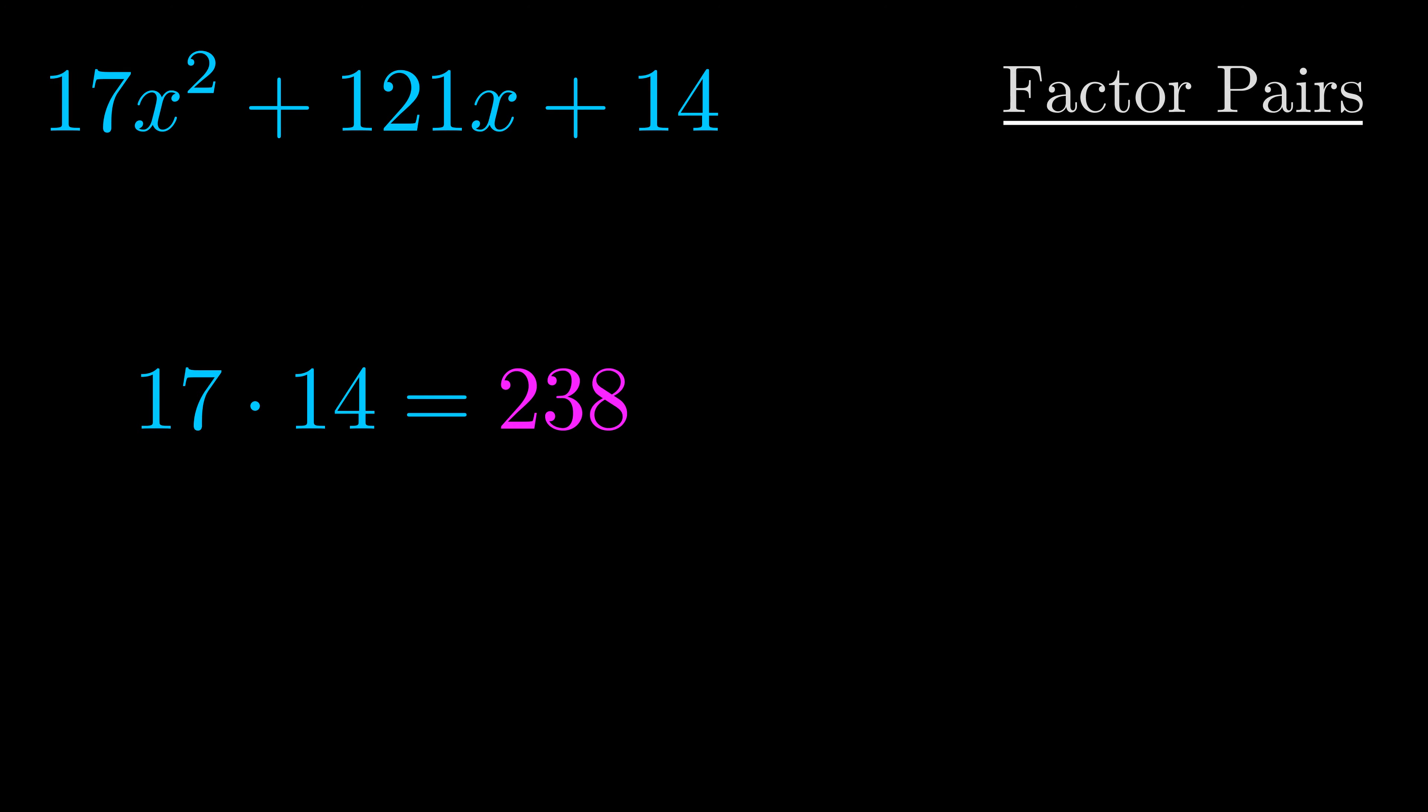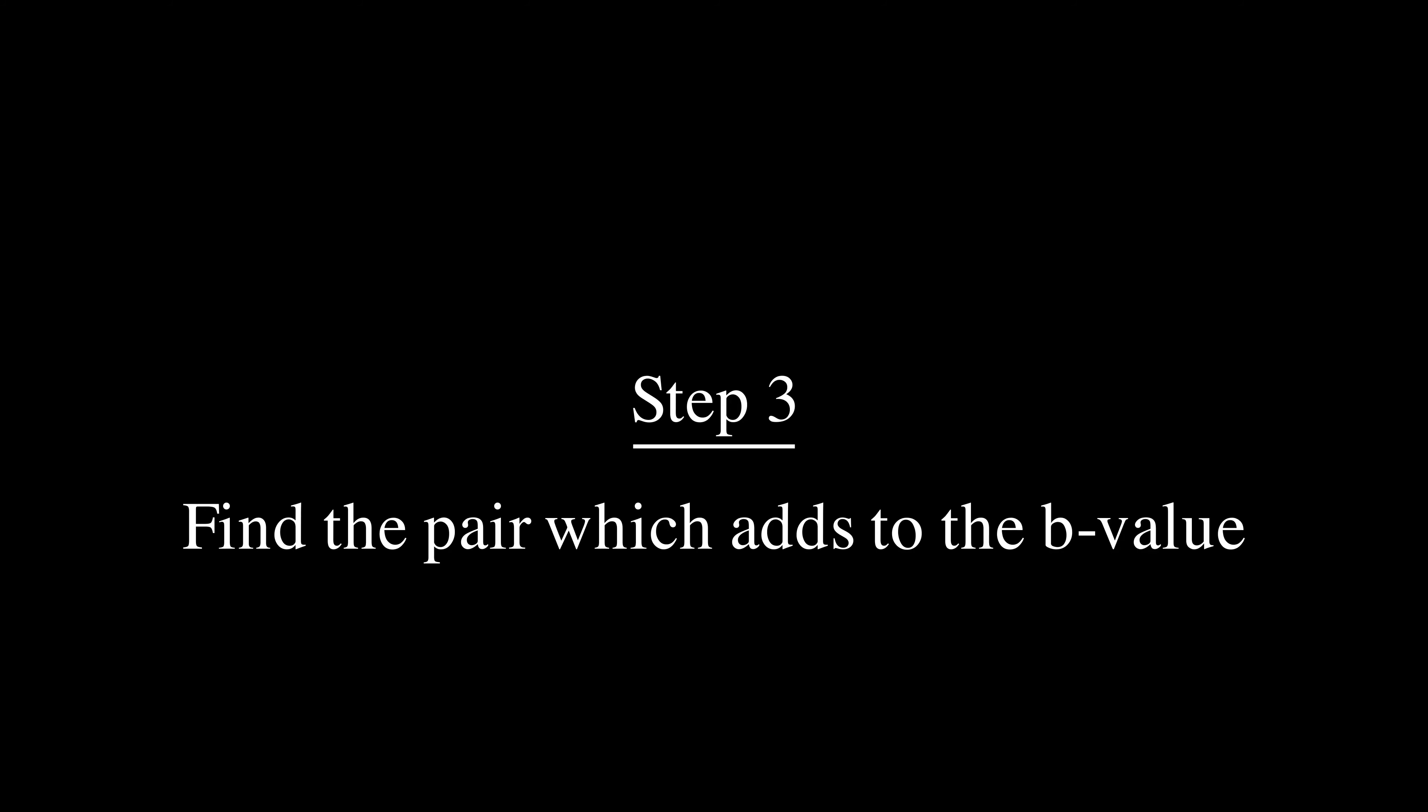Okay here's what I came up with. Now once you have these factor pairs the goal is to find which of these pairs adds to the b value. The b value is the coefficient on the x term.